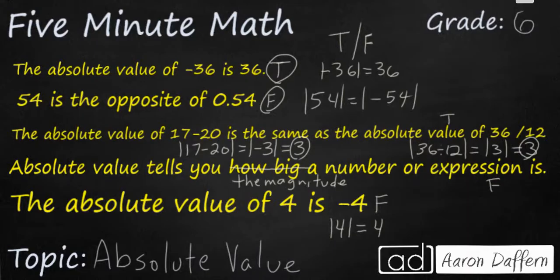Absolute value tells you how big a number or expression is. That is false. It tells you the magnitude or how far away it is from 0. It doesn't tell you how big it is. And finally, the absolute value of 4 is negative 4. That is incorrect. The absolute value of 4 is actually 4. You could change this if you want to say opposite, then you could make it true.